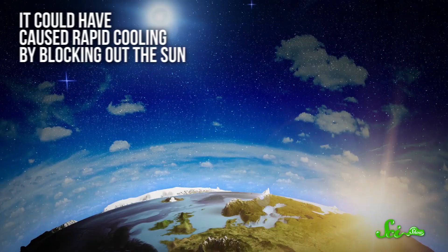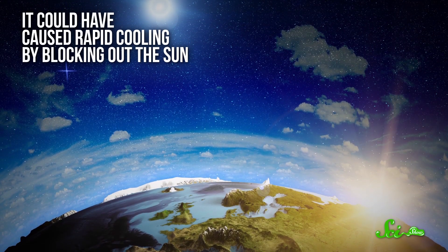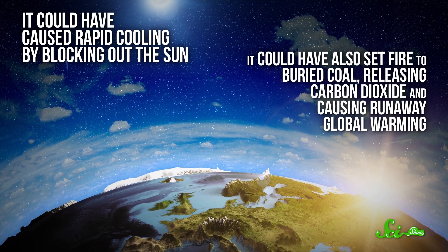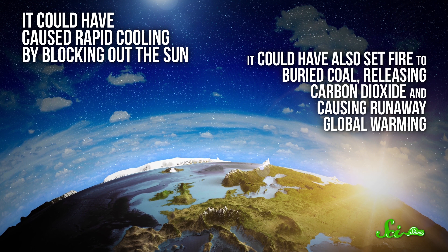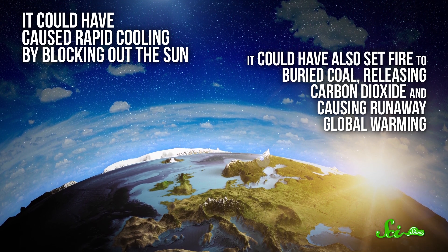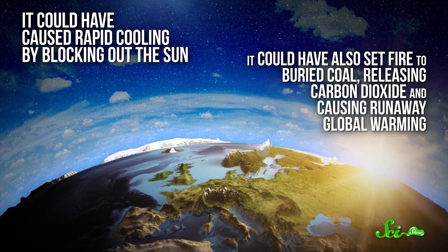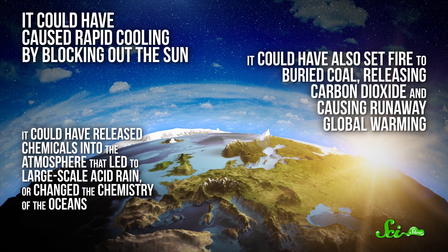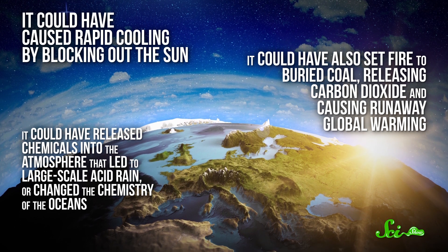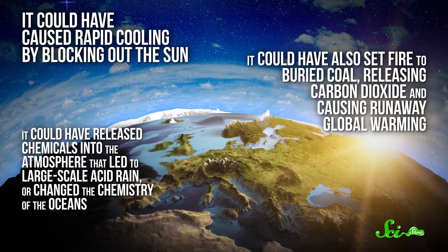Now, the reason this volcanic plume is such a likely suspect is because it could have done all sorts of life-ending things. It could have caused rapid cooling by blocking out the sun. It also could have set fire to buried coal, releasing carbon dioxide and causing runaway global warming. There's evidence for both kinds of temperature extremes. It could have released chemicals into the atmosphere that led to large-scale acid rain, or changed the chemistry of the oceans. We don't know exactly what those eruptions did, but we know they did something, and it probably wasn't pretty.